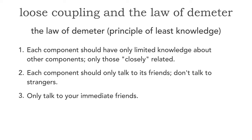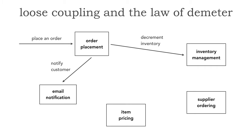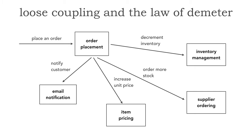There's a lot more going on when we place an order besides just notifying the customer and decrementing inventory. We also have a supplier ordering service or component to order more supplies from the vendor, and an item pricing component to manipulate the price as the order quantity changes. If the order quantity goes down to a certain amount, we need to order more stock — and the order placement communicates to the supplier ordering service saying we're down to 100 units, order more stock. If we go down to 50 and have no stock yet, the order placement tells item pricing to increase the unit price as a supply and demand function.